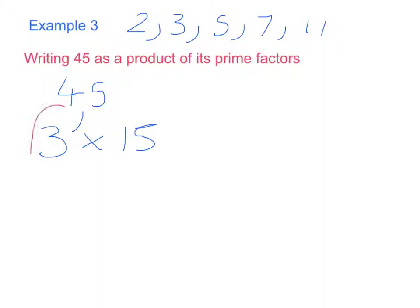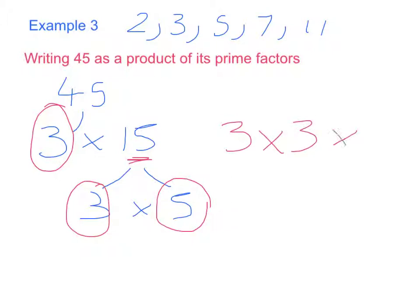And because 3 is prime, I want to keep it. 15 isn't prime because I can divide it by 3 and 5. So now I need to split 15 up again. Is it in the 2 times tables? No. Is it in the 3 times tables? Yep, 3 times 5 gives me 15. 3 is obviously prime, that's why I chose it. Is 5 prime? Yep. So my answer would be 3 times 3 times 5. Again, because I'm multiplying 3 by itself, I can rewrite that as 3 squared times 5.